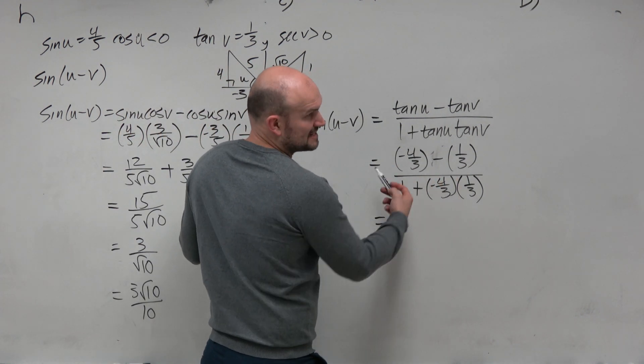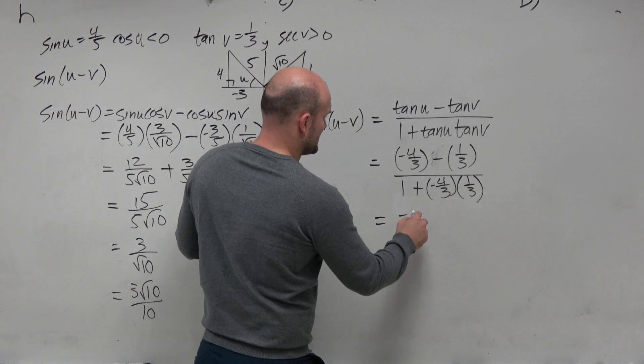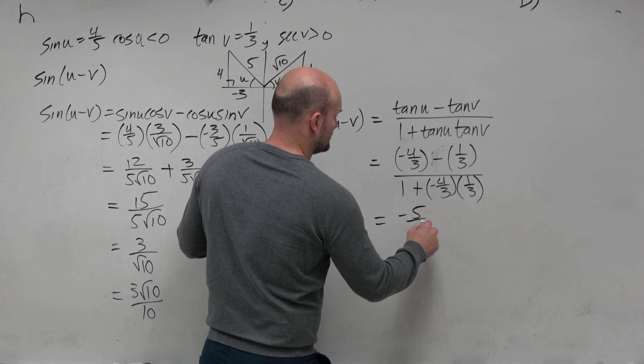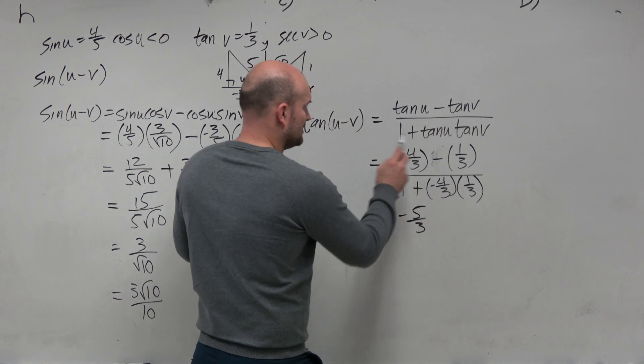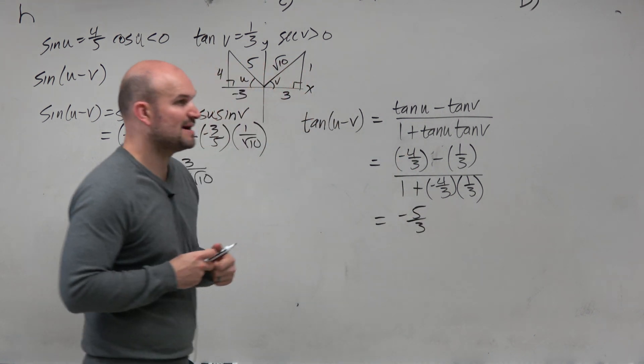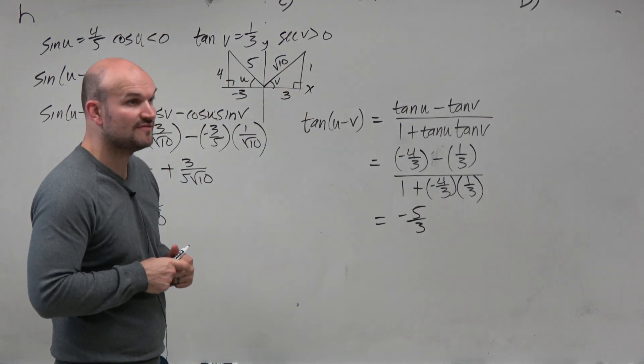So since these have common denominators, this isn't that crazy. Negative 4 thirds minus 1 third is negative 5 thirds.